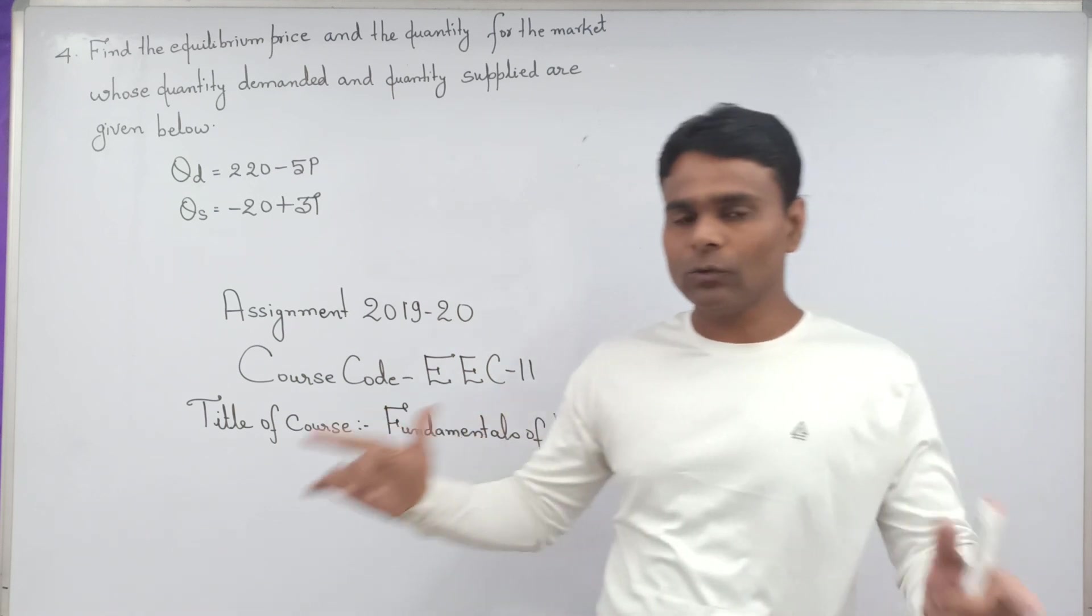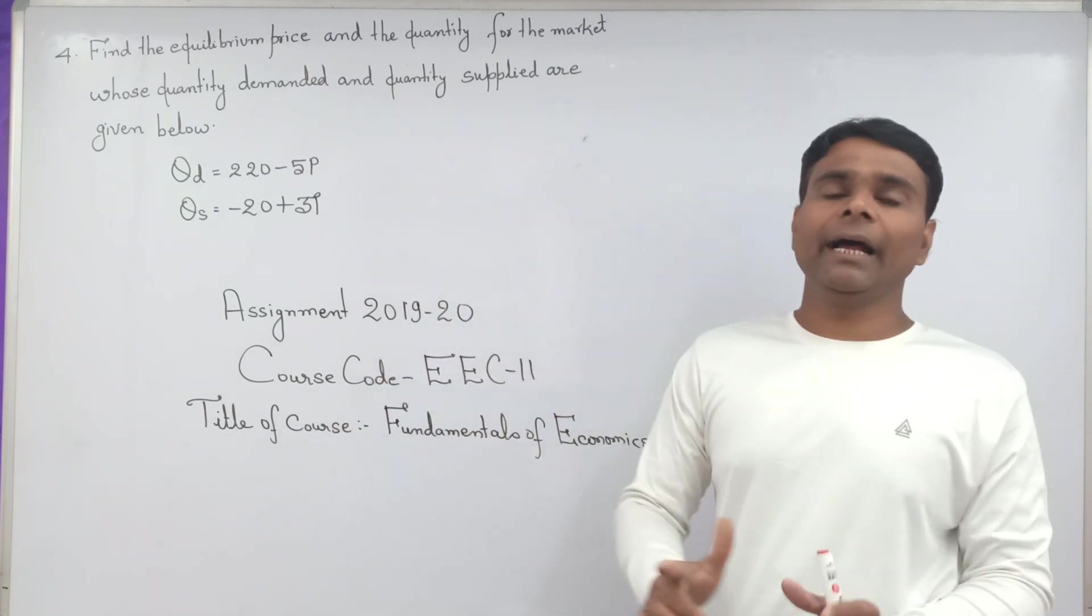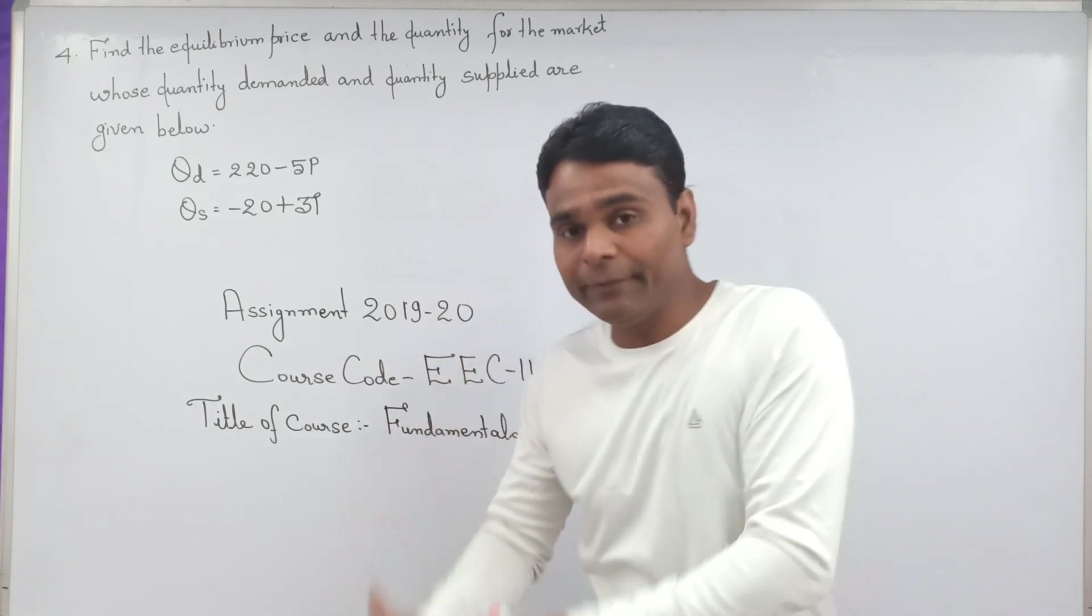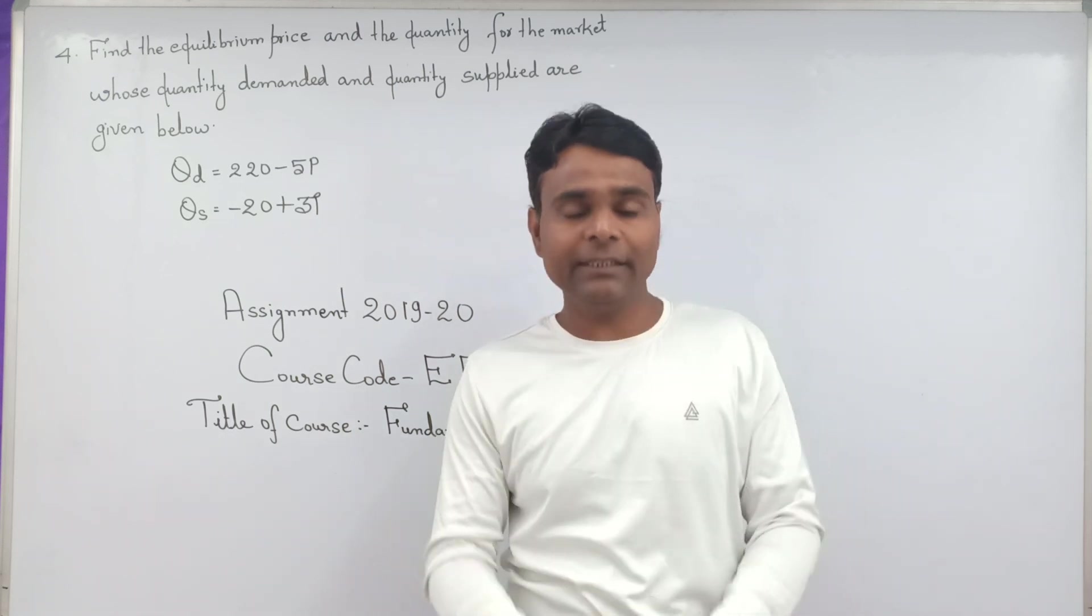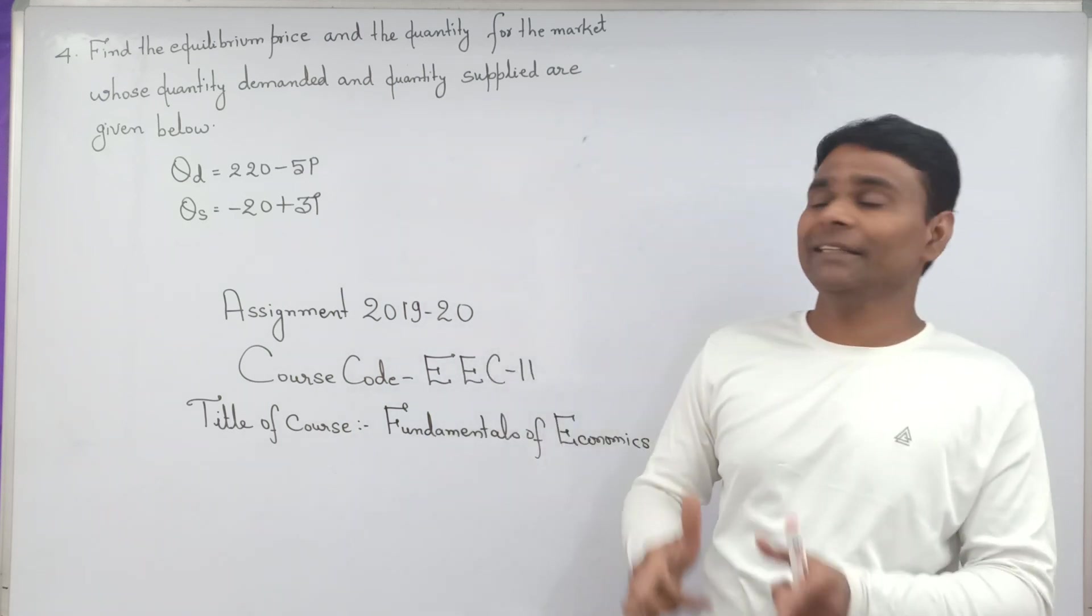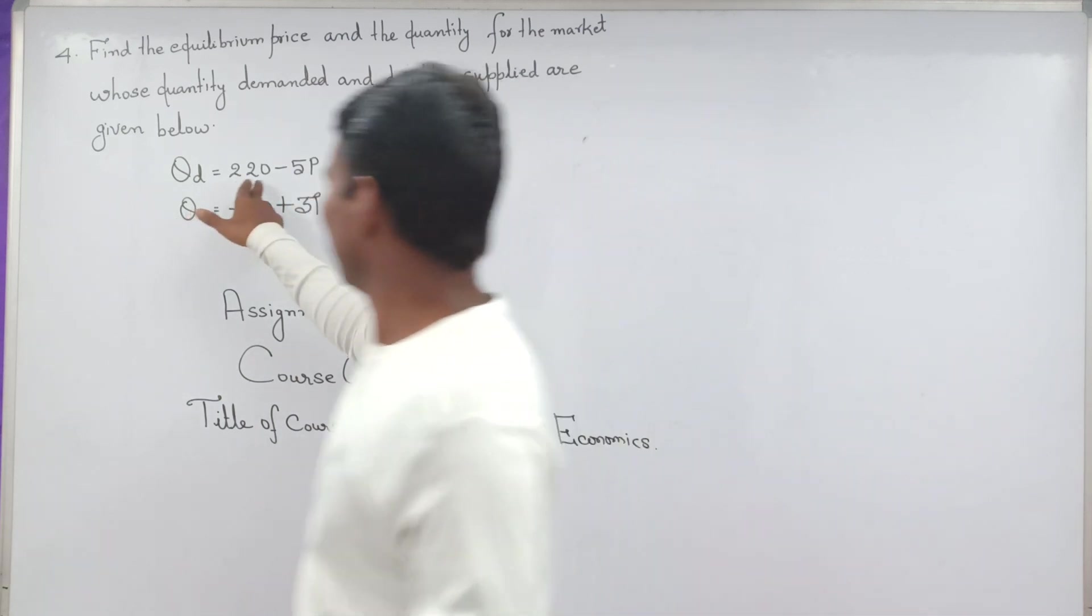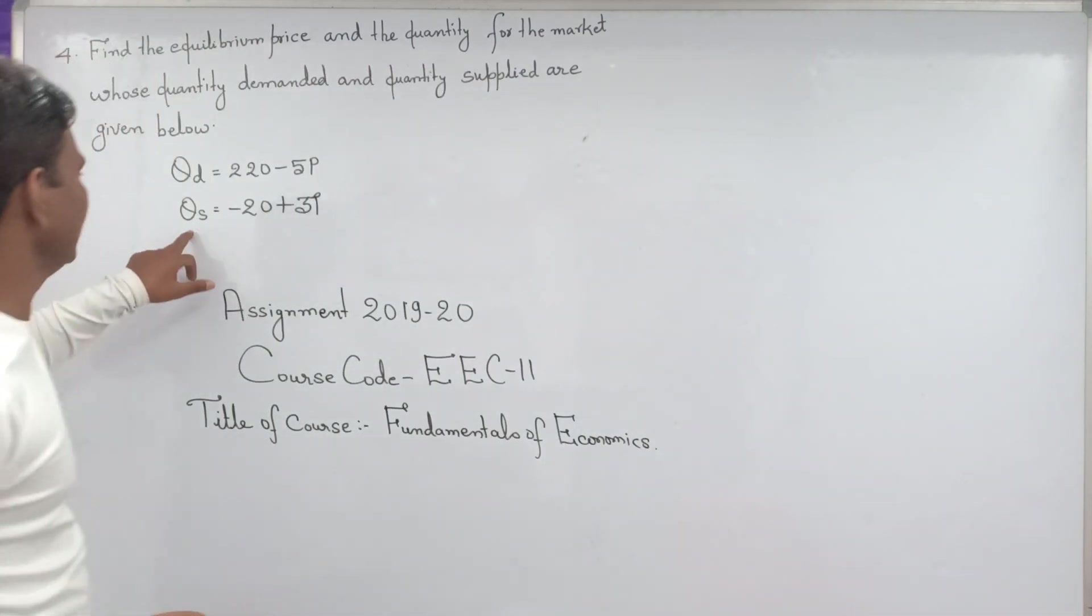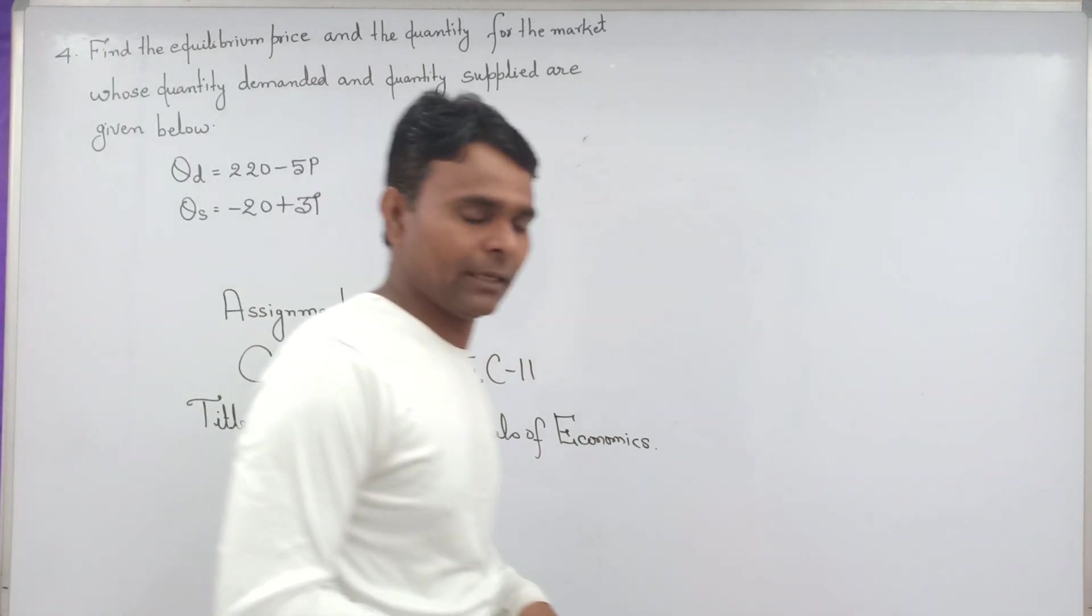Under this question, we have to find equilibrium price and the equilibrium quantity for the market whose quantity demanded and quantity supplied are given. QD equal to 220 minus 5P and QS equal to minus 20 plus 3P.